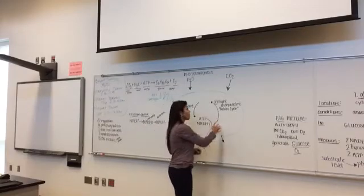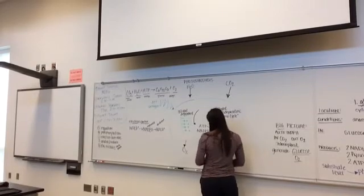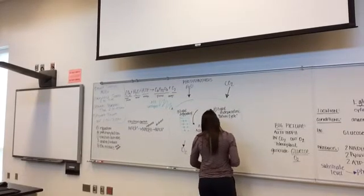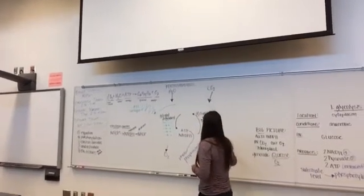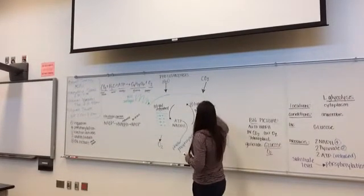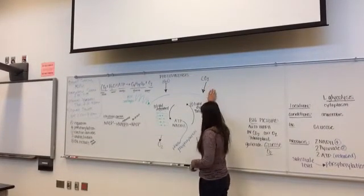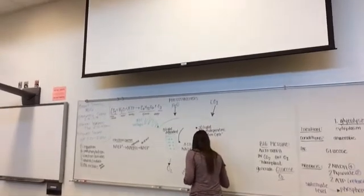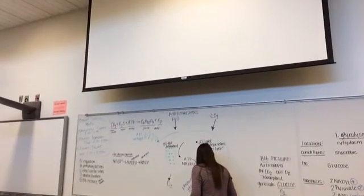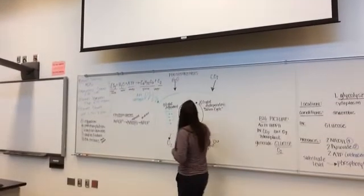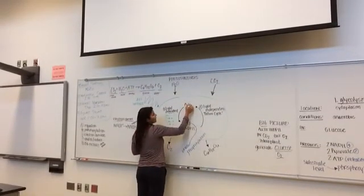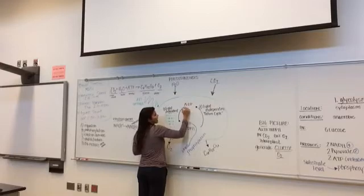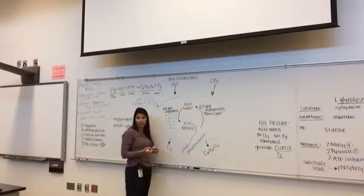In step two, the Calvin cycle, or the light-independent reactions, those occur whether they're sunlight or not. Now, carbon dioxide comes in, glucose is released, ADP and NADP are also released.